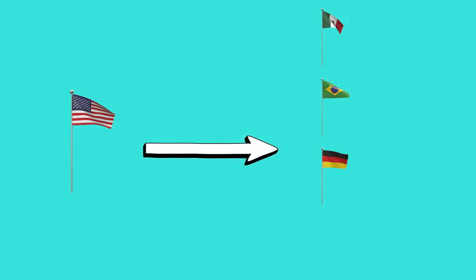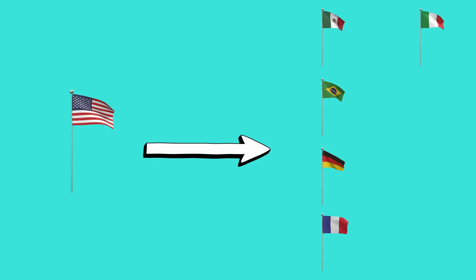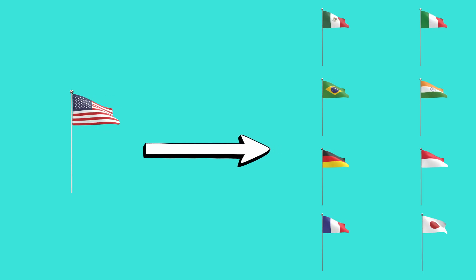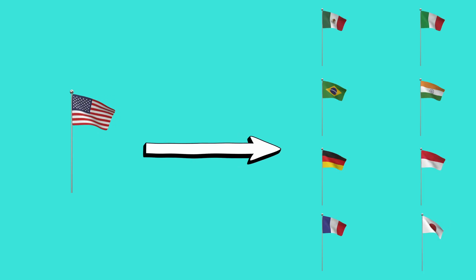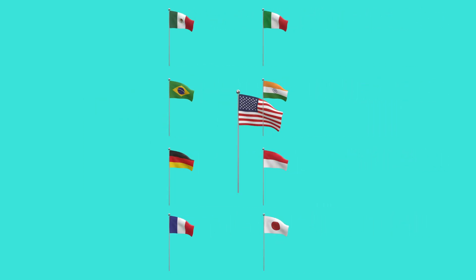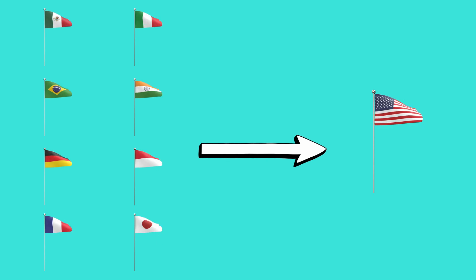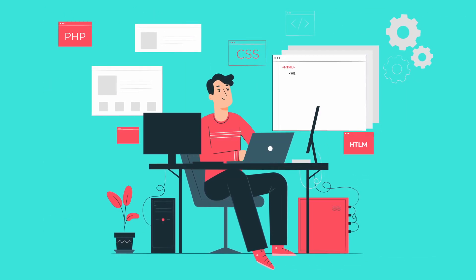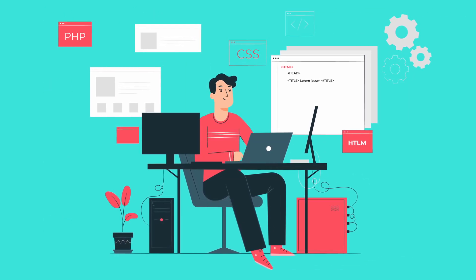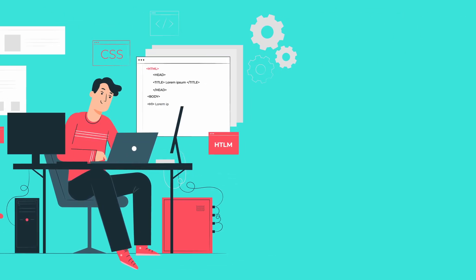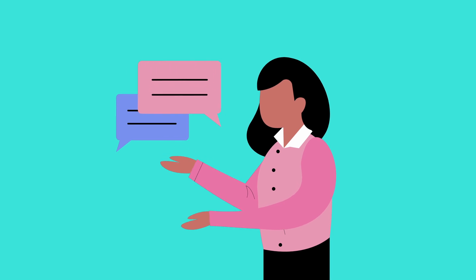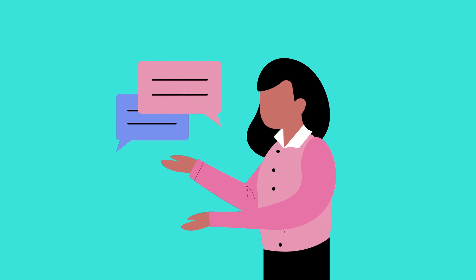Videos in English are translated into the other eight languages YouTube currently supports: Spanish, Portuguese, German, French, Italian, Hindi, Indonesian, and Japanese. If your video is in one of those languages, it will be translated into English. The AI first translates it beginning with a text script, then that translated text is converted into speech through AI-driven voice synthesis technology.